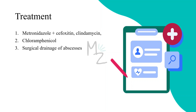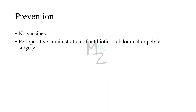Prevention: there is no vaccine available for Bacteroides Fragilis infections. The administration of perioperative antibiotics is necessary because transmission of Bacteroides Fragilis can occur after pelvic or abdominal surgery. If antibiotics are administered prior to surgery, transmission of Bacteroides Fragilis will be inhibited.